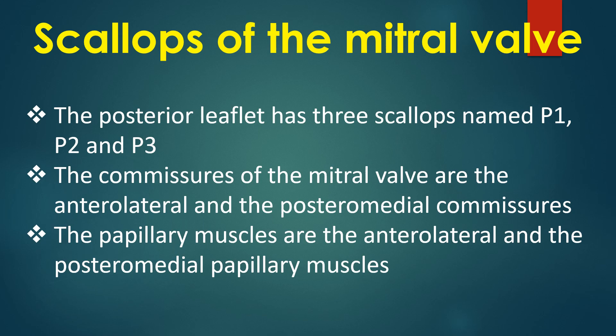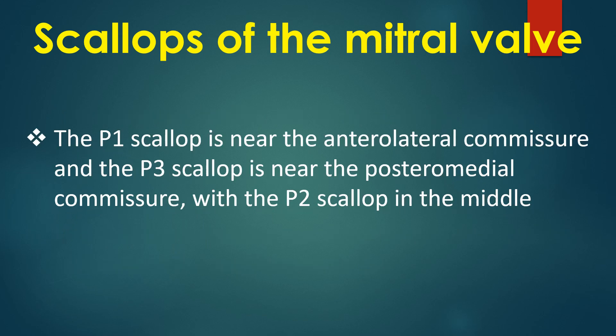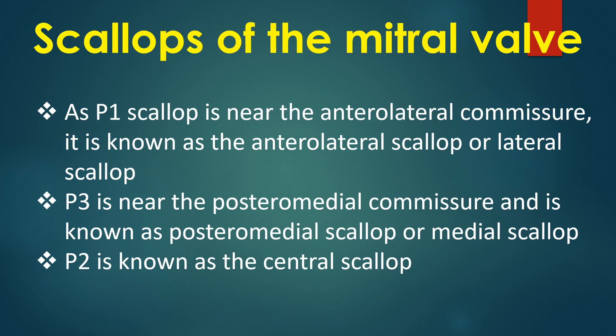The commissures of the mitral valve are the anterolateral and the posteromedial commissures. The papillary muscles are the anterolateral and the posteromedial papillary muscles. The P1 scallop is near the anterolateral commissure, and the P3 scallop near the posteromedial commissure, with the P2 scallop in the middle. P1 is known as the anterolateral or lateral scallop; P3 is known as the posteromedial or medial scallop; and P2 is known as the central scallop.